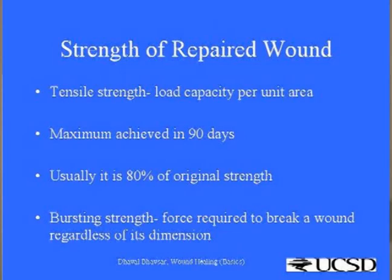Most of the remodeling and returning of wound strength is achieved by 90 days. Strength of the wound is tested as tensile strength and bursting strength. Tensile strength is the load capacity per unit area of the wound. Maximum tensile strength is achieved around 90 days and is usually around 80% of the original strength — which for the dermis provides adequate strength to withstand mechanical stress. Bursting strength is the force required to break a wound regardless of its dimensions.